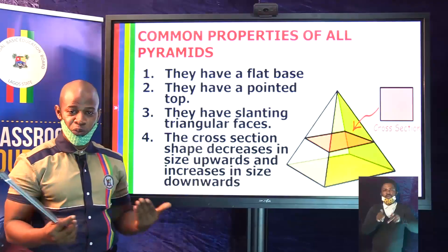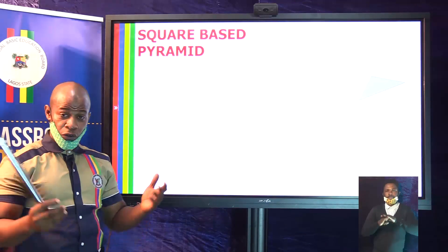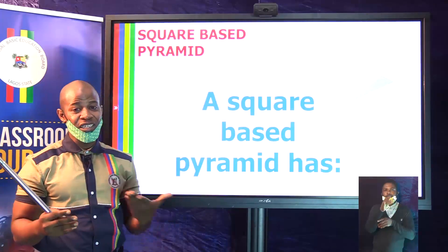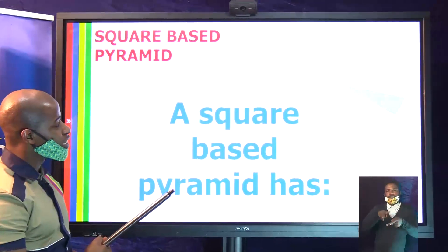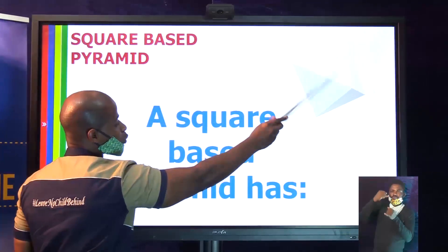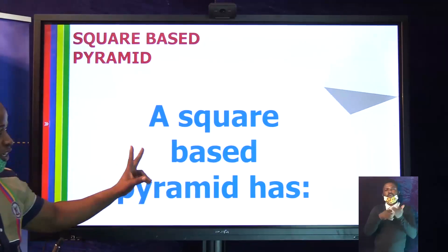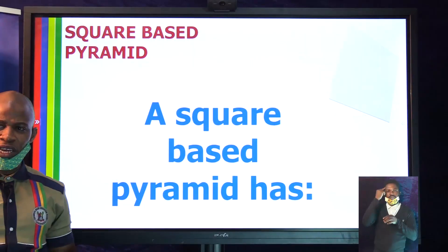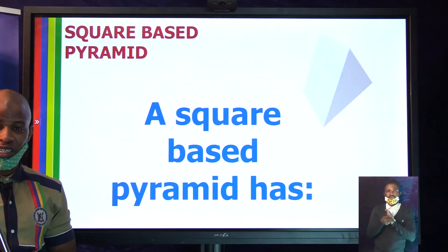Now we look at the different types of pyramids. The first pyramid I will consider is the square-based pyramid. From the name, the polygon at the base is a square. Before I show you its properties, I want you to observe and count: how many faces do you think it has, how many edges, and how many vertices? I will let this go on for one minute — you should have your answer ready by the time I come back.